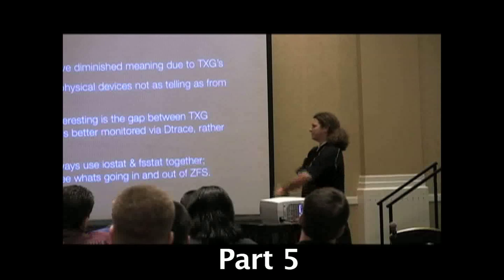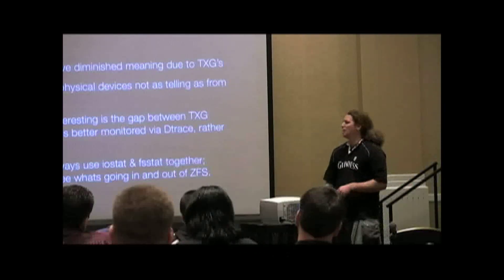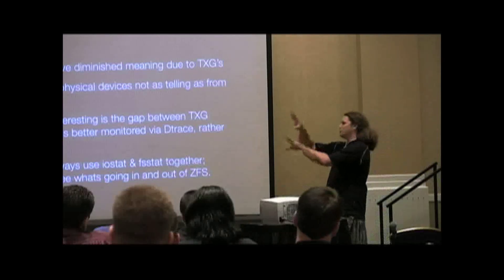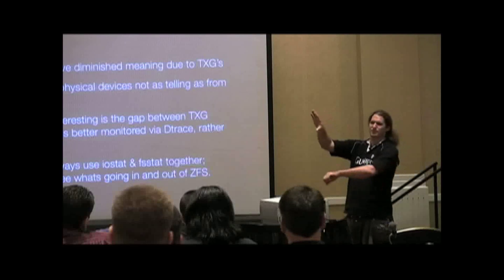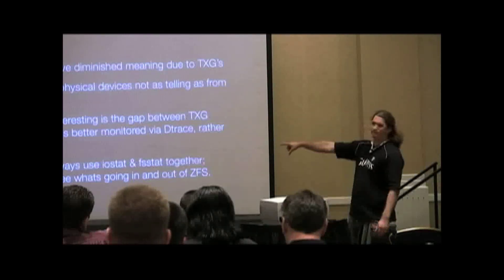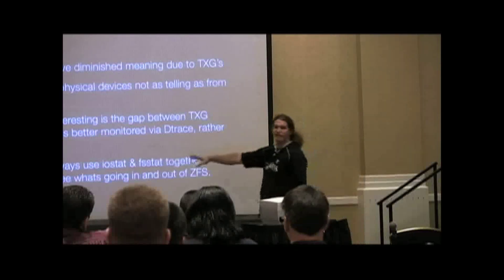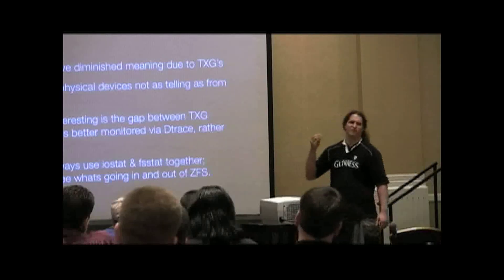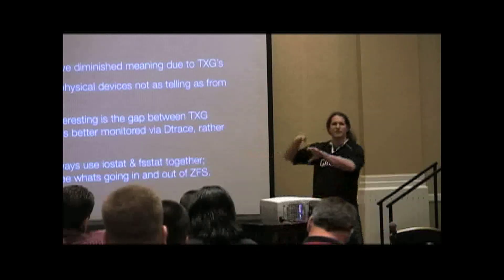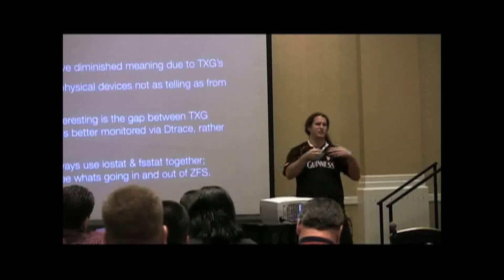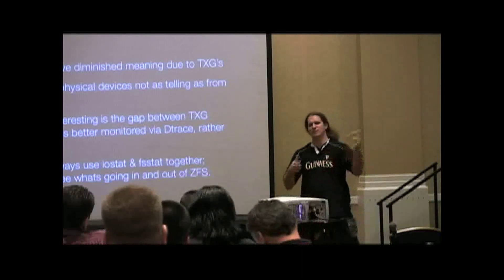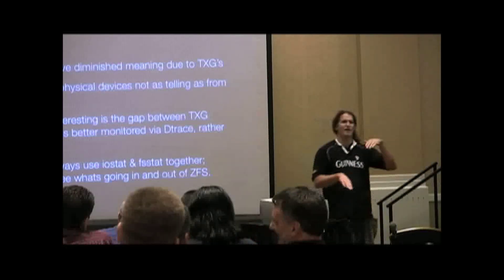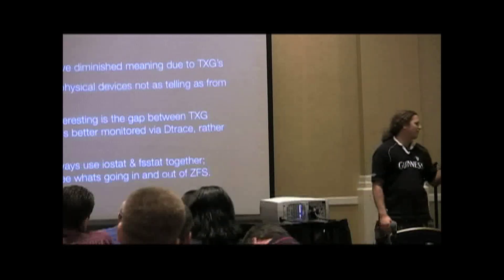If you must — since I know everyone will hear this and will continue to use IOSTAT as you always have — open two windows. In one of them run IOSTAT once per second, and in another run FSSTAT. If you've never used FSSTAT, this is the tool you've always wanted and didn't even realize was there. It will be an epiphany moment. FSSTAT shows you what's going on in the virtual file system, between your application and ZFS. IOSTAT shows you what's going on between ZFS and the disk. This will be extremely informative.